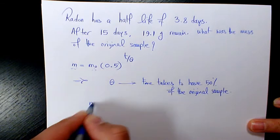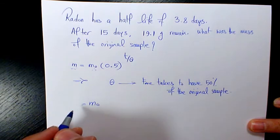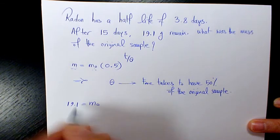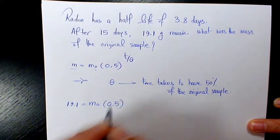So in this example we need to find out how much mass was the original, so m₀ is missing. m is the final mass which is 19.1. t is...